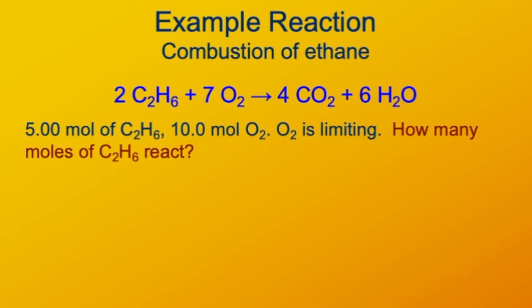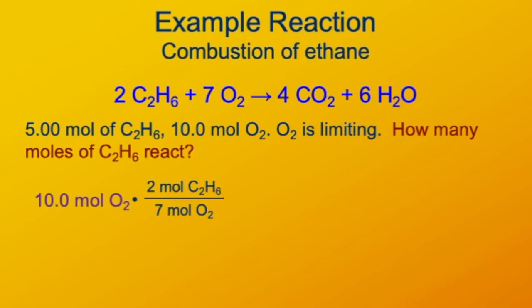With 5 moles of ethane and 10 moles of oxygen, and knowing oxygen is limiting, how many moles of C₂H₆ are going to react? Since oxygen is limiting, we start with 10 moles of oxygen. There are 2 moles of C₂H₆ for every 7 moles of oxygen, so that gives us 2.86 moles of ethane that will react — only a little more than half of the 5 moles present.